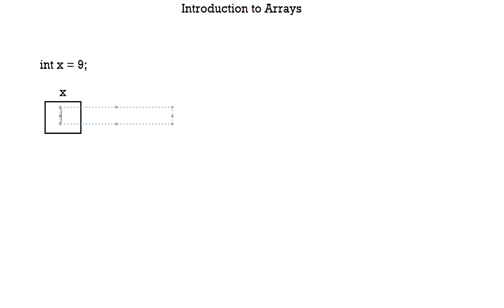Welcome back to another video. Till now, what we've seen is that in Java, we can declare variables of a specific type. Here we've taken X and we can store a specific value in it. This basically means I've created a box, named it X, and stored an integer value — stored 9 in the box. If I want to store another value, say 8, the previous value is replaced by the new one. So we can't store multiple values in this concept.